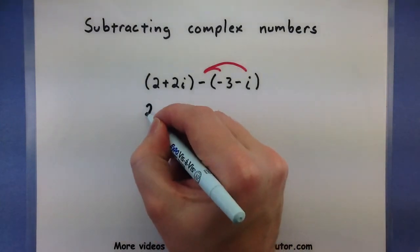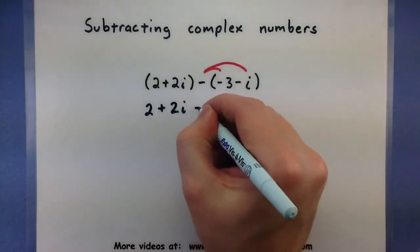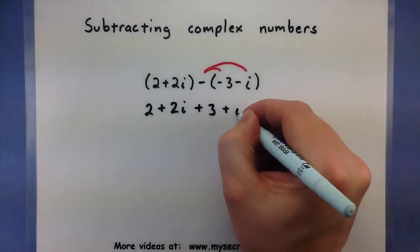So this will allow me to write 2 plus 2i, then minus a minus will give me a plus 3, minus a minus gives plus i.